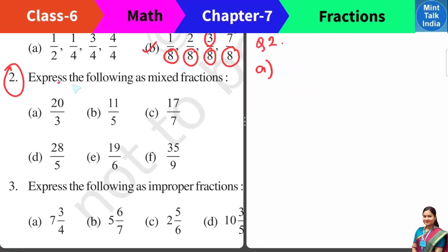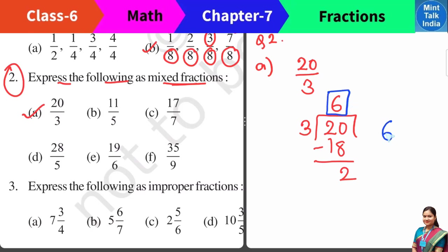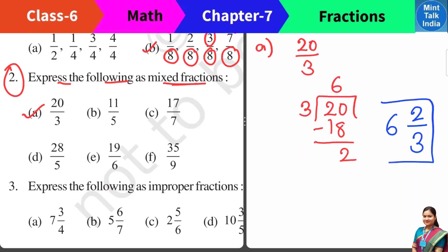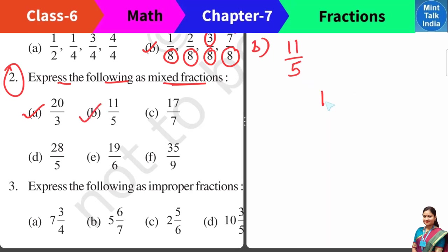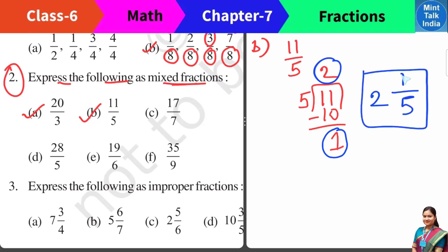Now question 2: Express the following as mixed fractions. Number 1 is 20 by 3. We divide the numerator by the denominator 3 — 6 threes are 18, remainder 2. Mixed fraction: quotient 6 as whole number, remainder 2 as numerator, divisor 3 as denominator. Answer: 6 and 2 by 3. Next is 11 by 5 — 11 divided by 5, 2 fives are 10, remainder 1. Quotient 2 as whole number, remainder 1 as numerator, divisor 5 as denominator. Answer: 2 whole and 1 by 5.